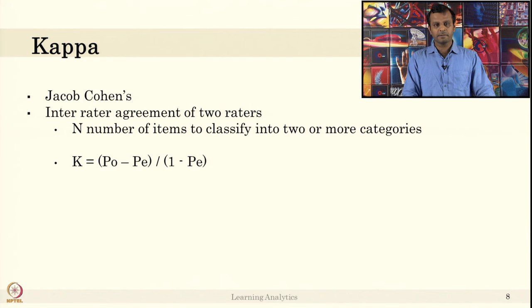There is another metric which is developed by Jacob Cohen, it is called Kappa. In Kappa, it is developed to measure the inter-rater agreement of two raters. What is inter-rater agreement of two raters? Let us take an example.